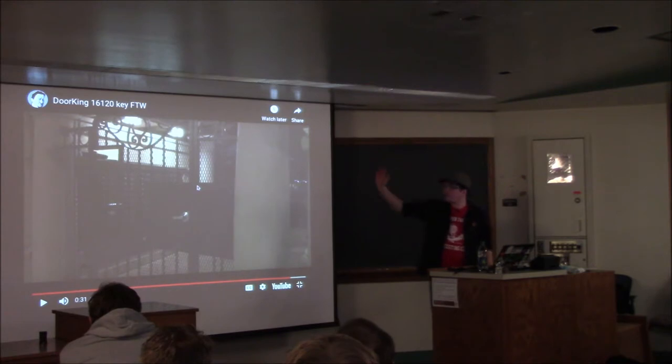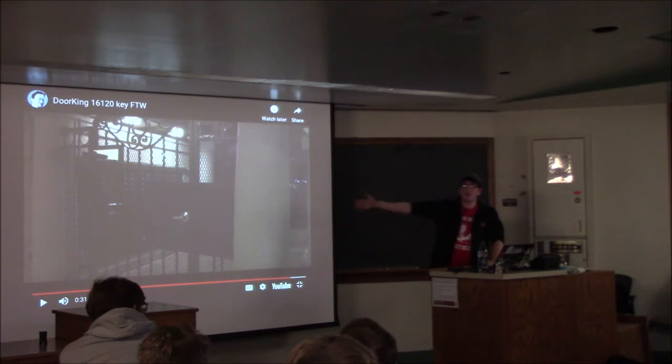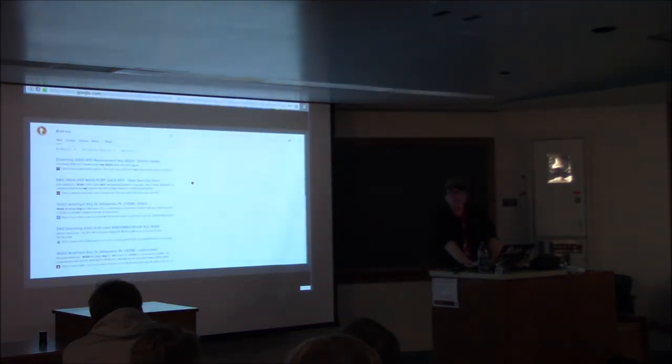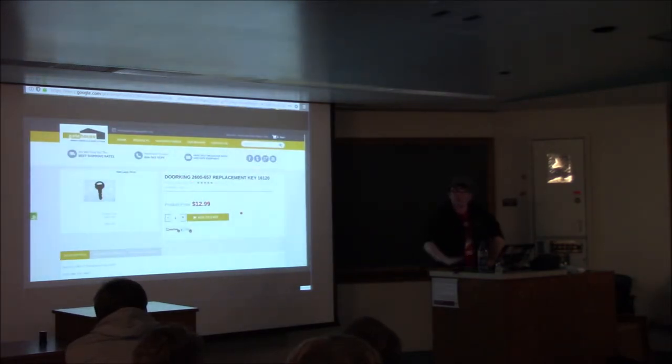Now, to be fair, this isn't some high security facility. This is just a gate at an apartment complex. He says in the description, he's visiting his friend or something. And if you wanted to get by this, you don't need to open the box. If you look at the top of this here, there's this big open gap in the wrought iron. You get a branch or something, reach through and push the handle from the other side. But still, it's kind of funny that you can just open the box and let yourself in. And those are pretty prevalent, and he mentioned the DoorKing 16120 key. Surely that's something that only security professionals and DoorKing maintenance people would own. Turns out, you type 16120 key into your search engine of choice, you can buy them for $13. Just have them shipped right to your house.